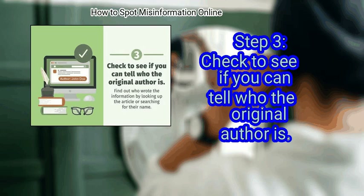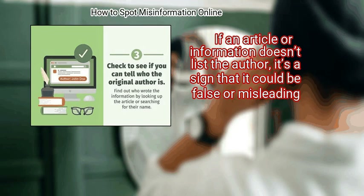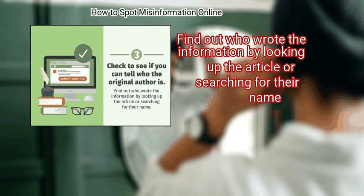Step 3: Check to see if you can tell who the original author is. If an article or information doesn't list the author, it's a sign that it could be false or misleading. Find out who wrote the information by looking up the article or searching for their name.